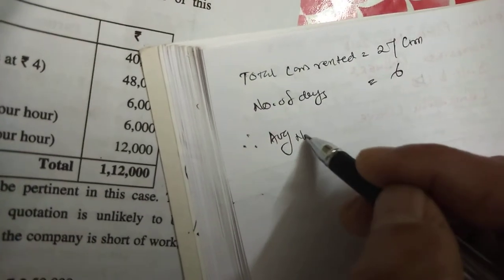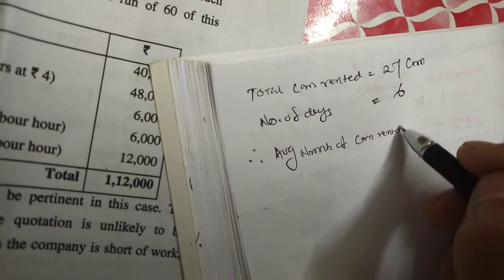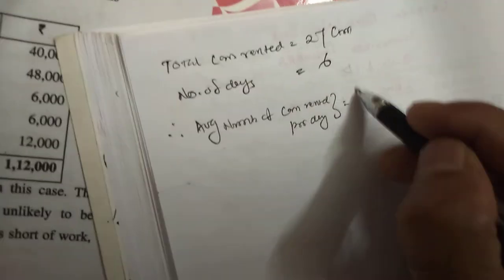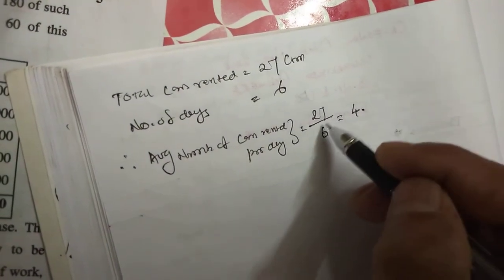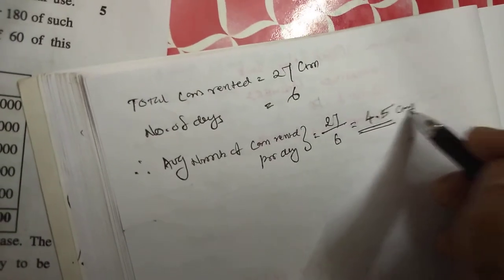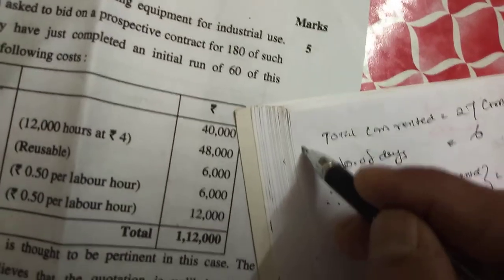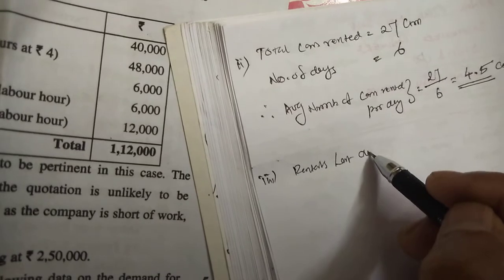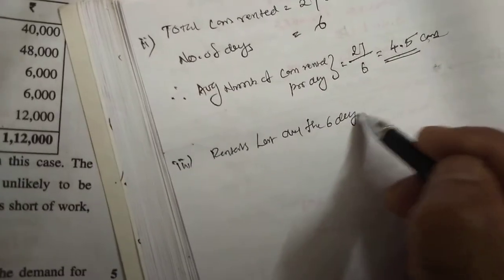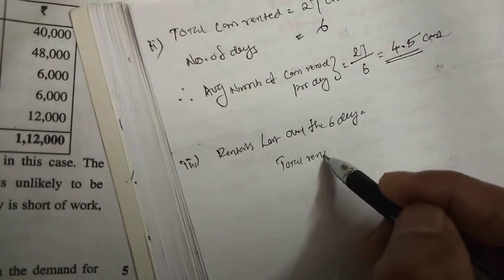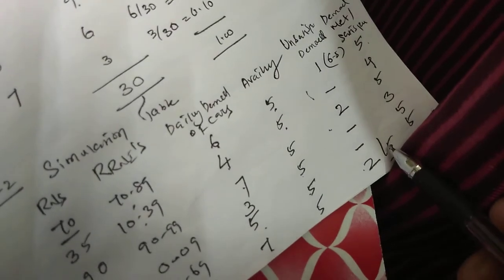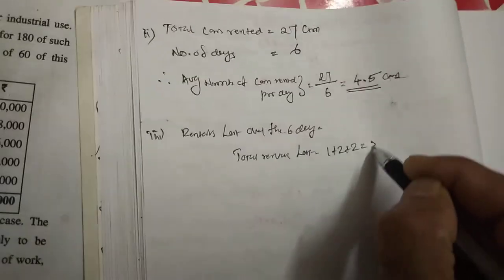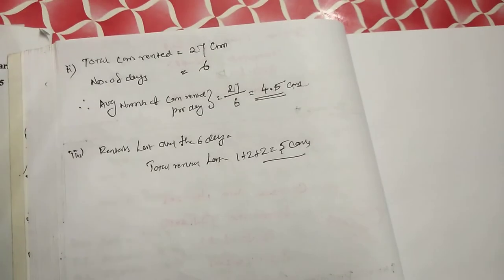Average number of cars rented per day equals total cars rented divided by number of days, which is 27 divided by 6, equal to 4.5 cars. For sub-question 3, rentals lost over the 6 days: total rentals lost equals 1 plus 2 plus 2, equal to 5. That is the final answer. Thank you very much for watching.